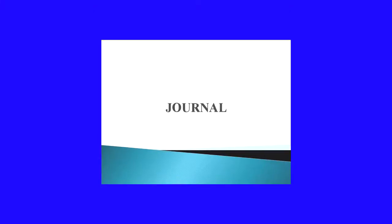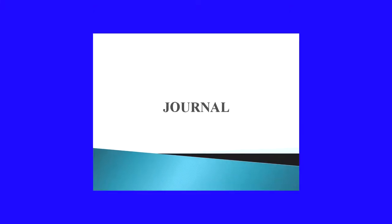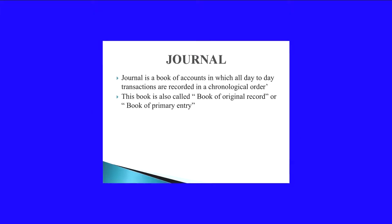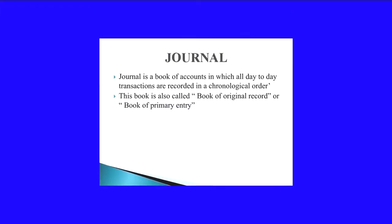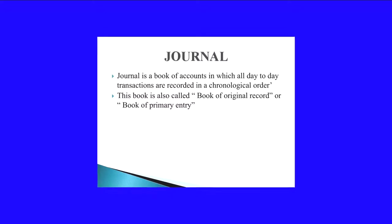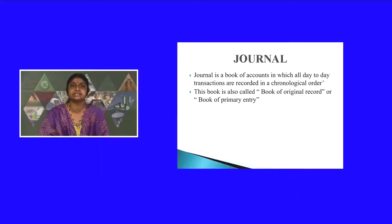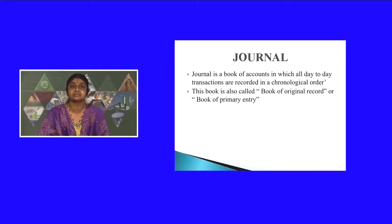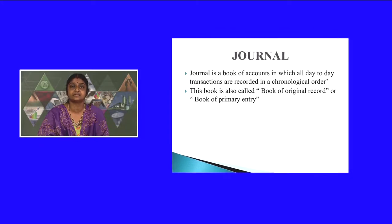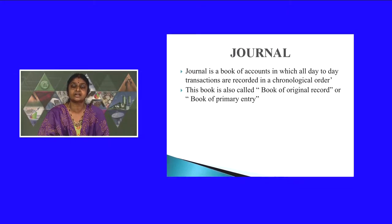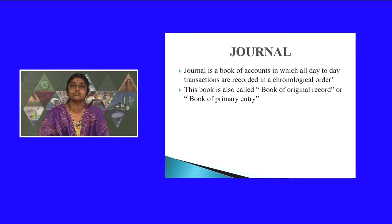Today we can start with a new chapter: Journal. The accounting process starts from this chapter. Journal is a book of accounts in which all day-to-day transactions are recorded in a chronological order, that is in the order of dates. Transactions when recorded in the journal are known as entries, so you can say it as a journal entry. Journal is also known as book of original record or book of primary entry.